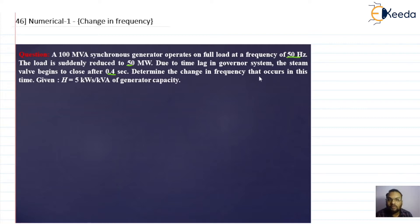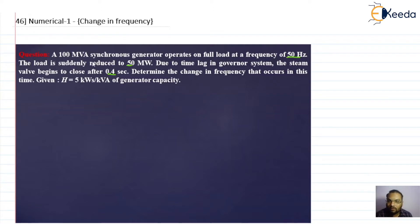We need to find the change in frequency that occurs during this 0.4 second delay. Because of this time delay, the frequency will change — it will increase, since the load is decreasing. The inertia constant H is given for the generator as 5 kilowatt-seconds per kVA.